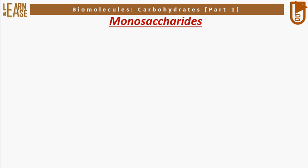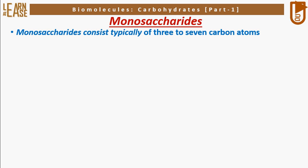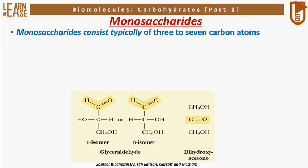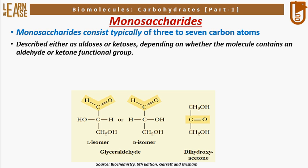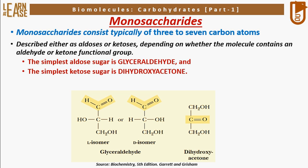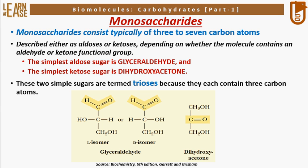Now let me explain the basic structure of monosaccharides. Monosaccharides consist typically of 3 to 7 carbon atoms. The image represents a simple 3-carbon aldose sugar, glyceraldehyde, and a 3-carbon ketose sugar, dihydroxyacetone. Glyceraldehyde can exist in D and L isomeric form as it possesses one chiral carbon, whereas dihydroxyacetone does not possess a chiral center so it cannot exist in D and L isomeric form. Monosaccharides are described as aldoses or ketoses depending on whether the molecule contains an aldehyde or ketone functional group. The simplest aldose is glyceraldehyde and the simplest ketose is dihydroxyacetone — both are termed trioses because they each contain three carbon atoms.